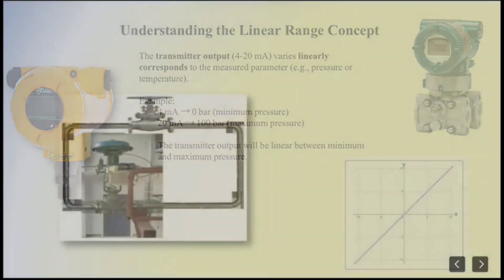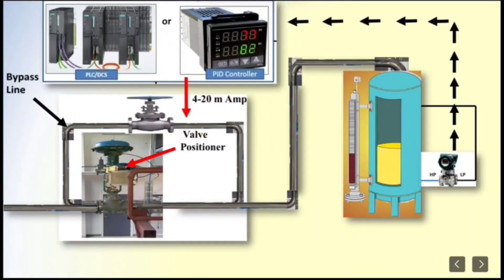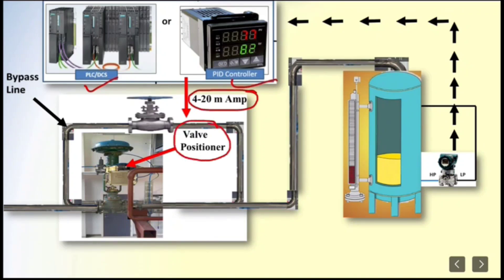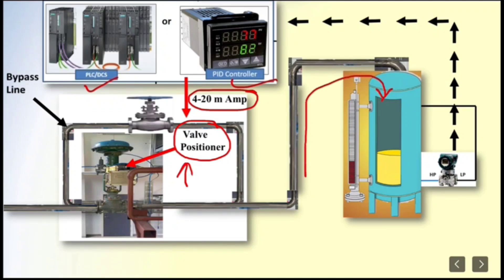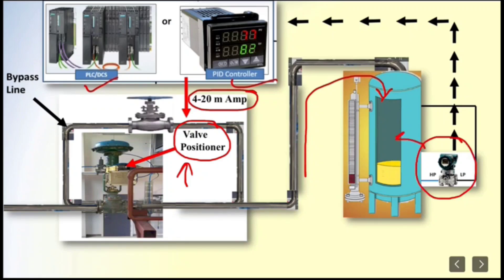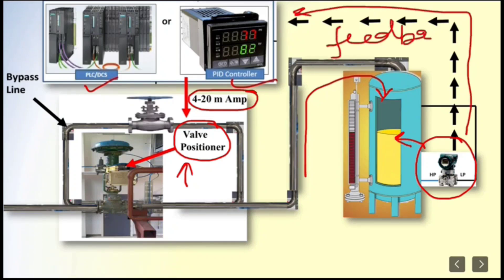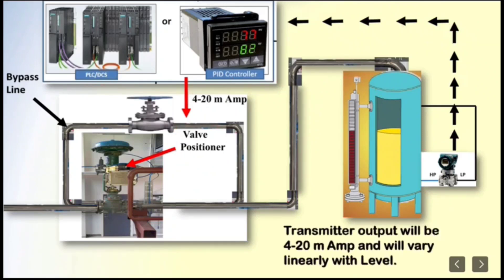Here we have shown a level control system. We will use a controller — PLC, DCS, or PID controller. From the controller, a 4 to 20 mA signal will be given to the control valve, and this signal is passed to the positioner. When the control valve operates, liquid will start going into the tank and filling it. To measure the level of that liquid, we have used a DP type transmitter, which will continuously keep measuring this level. The 4 to 20 mA signal will be sent back to the controller as feedback, and the output of the transmitter will vary linearly with the level.